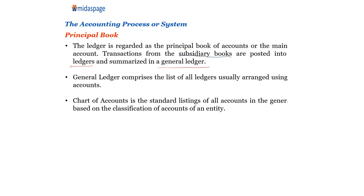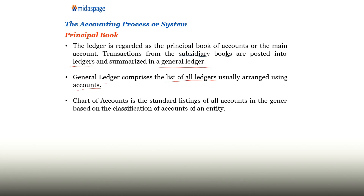From the subsidiary books, you post those transactions to their specific ledgers, as we are going to see soon. The general ledger is the listing of all ledgers, usually arranged using a chart of accounts.